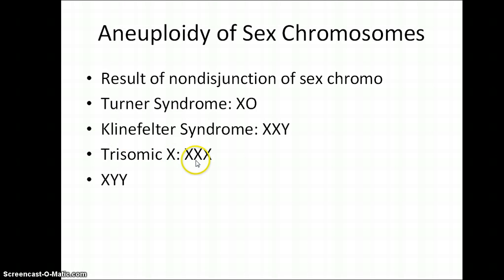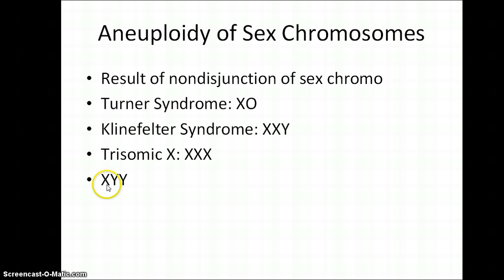Trisomy of the X chromosome — a female with an extra X chromosome — usually results in a phenotype that is indistinguishable from females who have two X chromosomes. The reason for this is X chromosome inactivation: the female may have three X chromosomes, but two of them are inactivated. The final example is a person who is XYY. With the Y chromosome the person is male, but because the Y chromosome has so few genes — mostly related to producing and operating the testes — there are minimal phenotypic effects, usually just increased height.